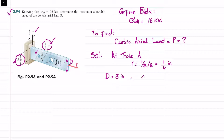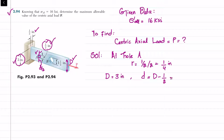The net width small d is the remaining width after removing the hole. It equals capital D minus the hole diameter: 3 minus 0.5, which gives small d equal to 2.5 inch.